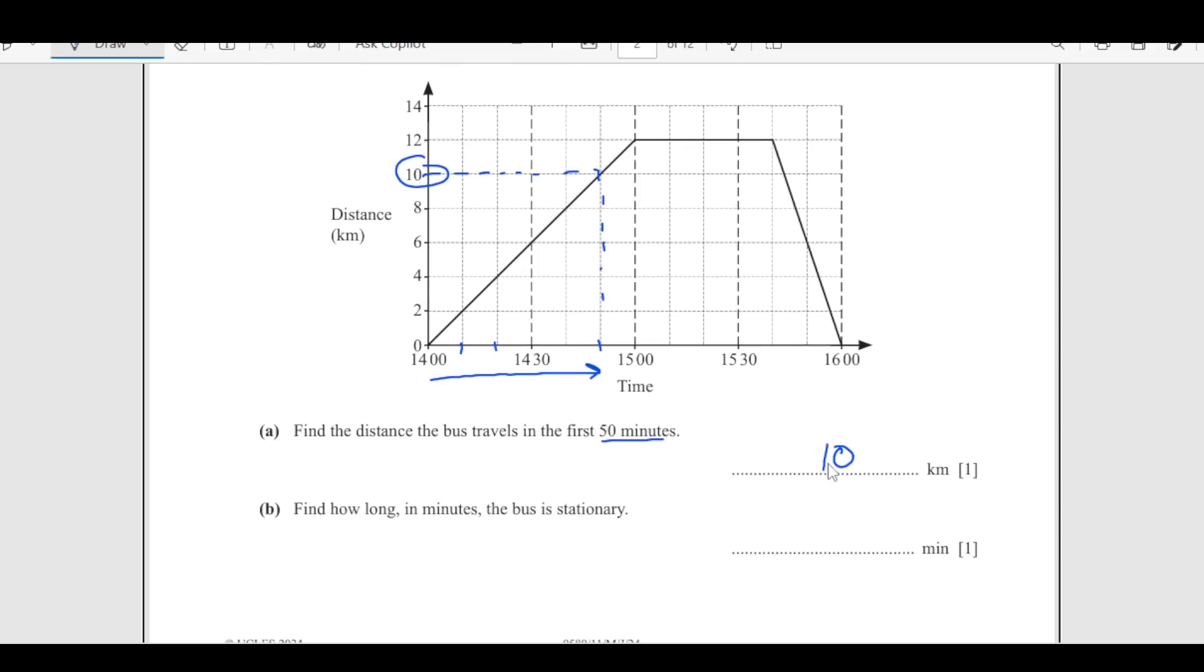Part B: find how long in minutes the bus is stationary. It is stationary at this point. How long? This is 10 minutes, 20, 30 and 40. So it will be 40 minutes. Simple question.